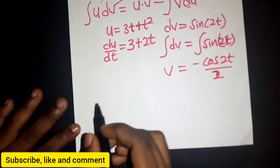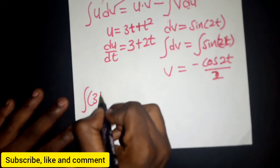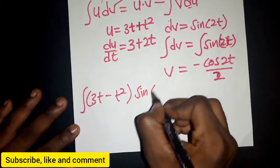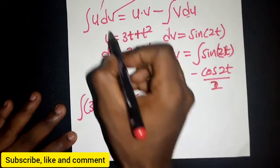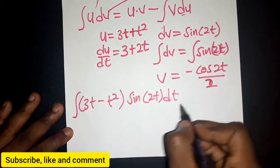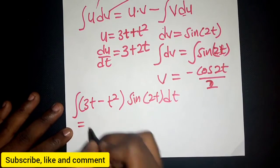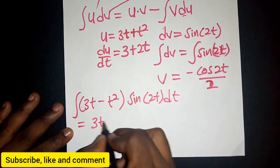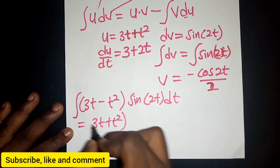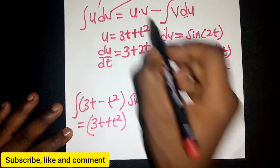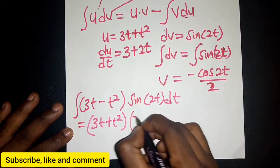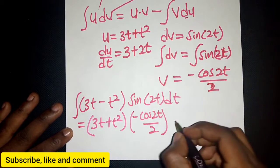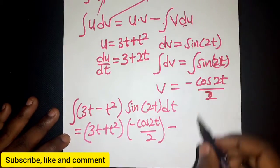Now we write out the equation. The integral of (3t + t²)·sine(2t) dt equals u·v minus integral of v·du. So we have (3t + t²) multiplied by v, which is -cos(2t)/2, then minus the integral of v·du.